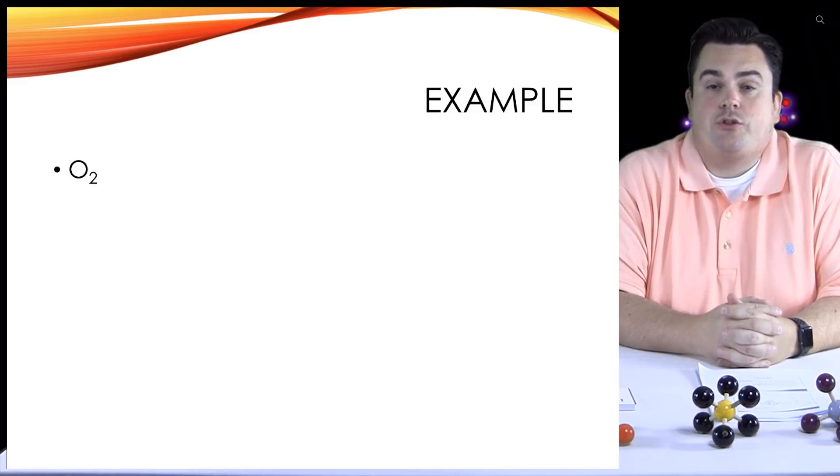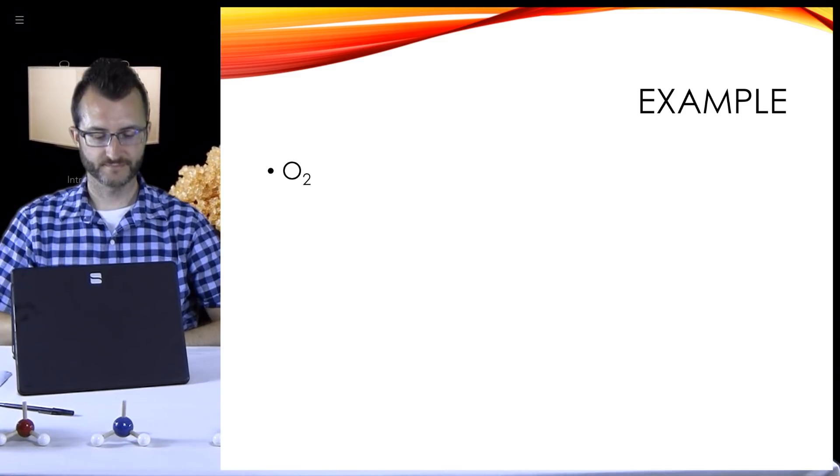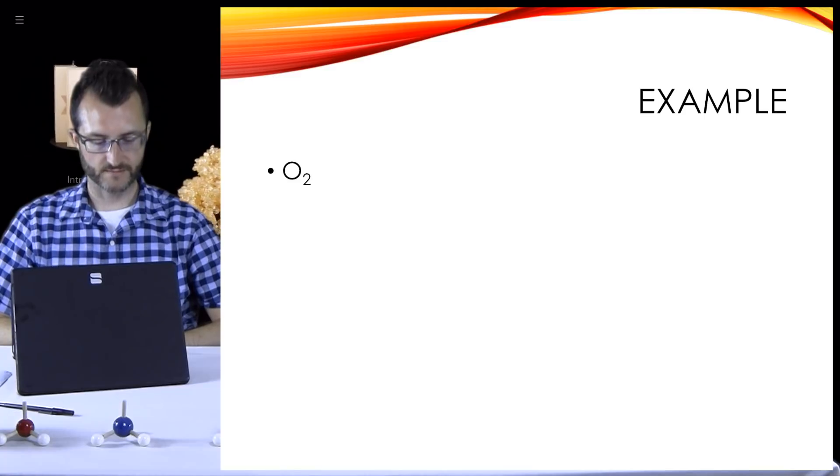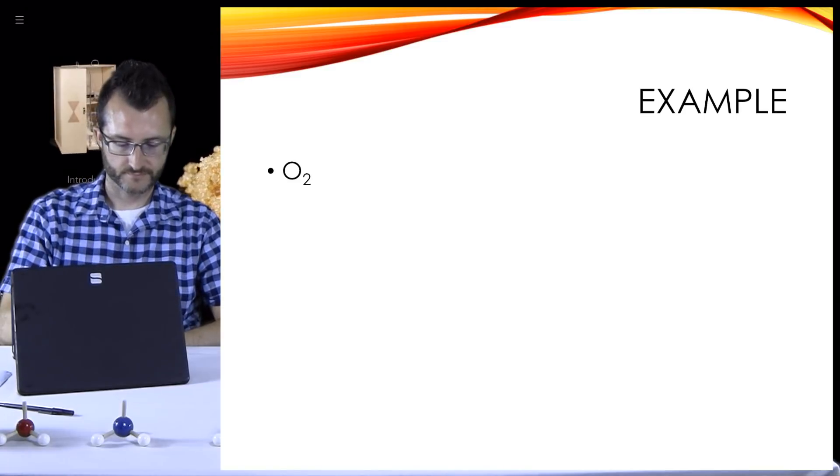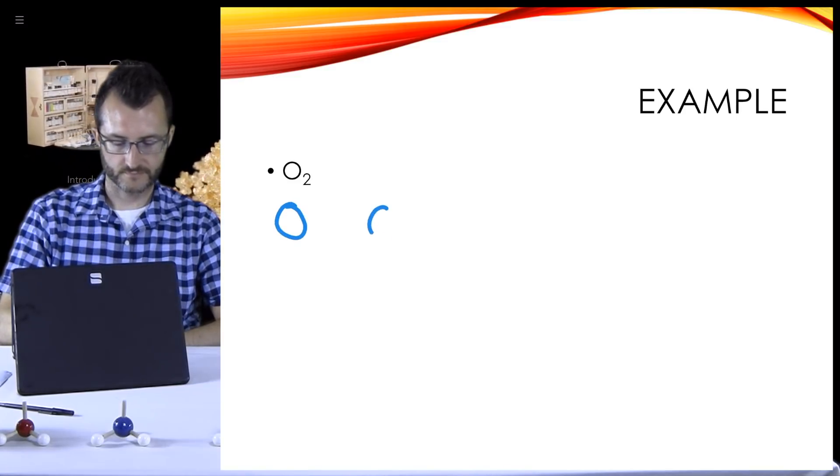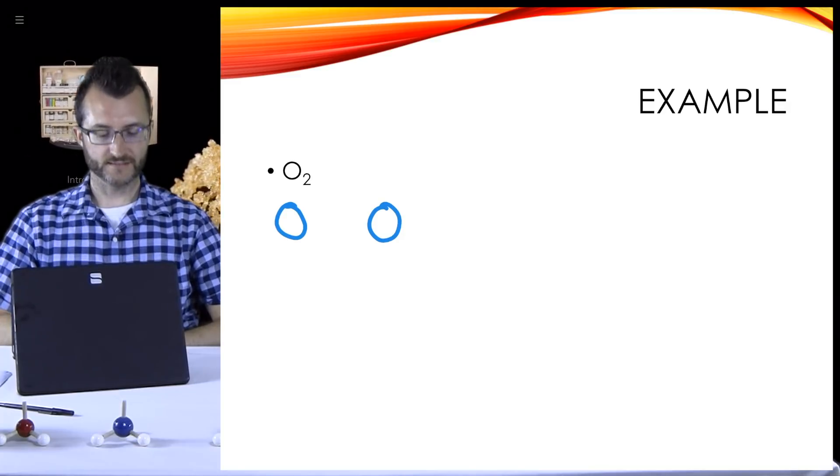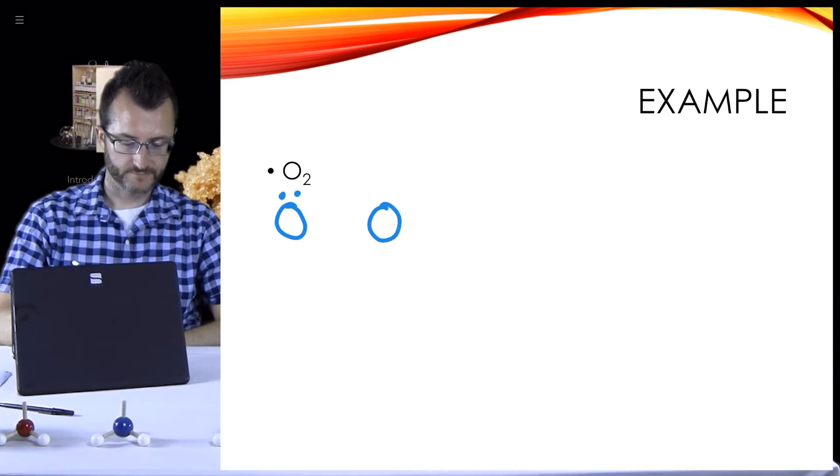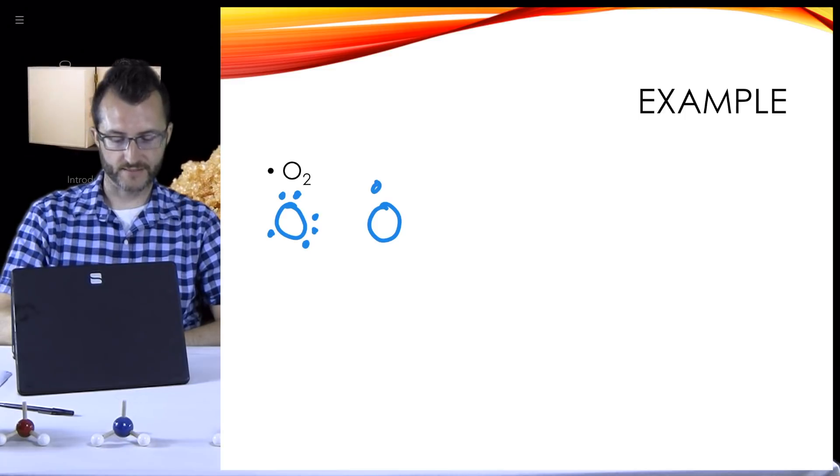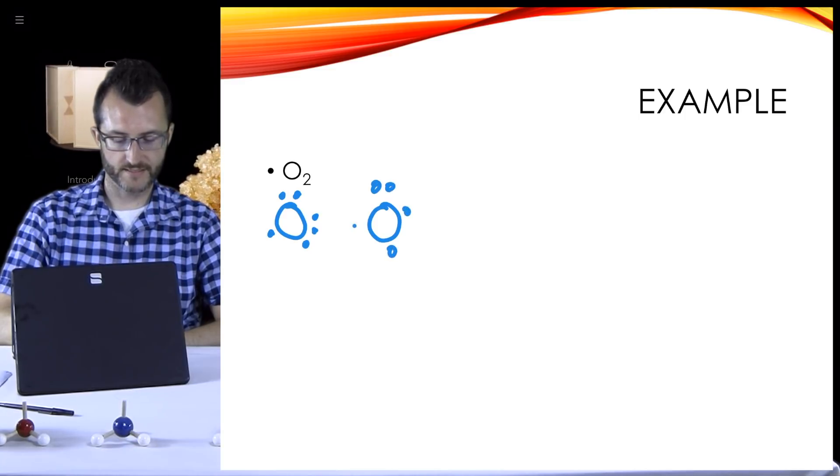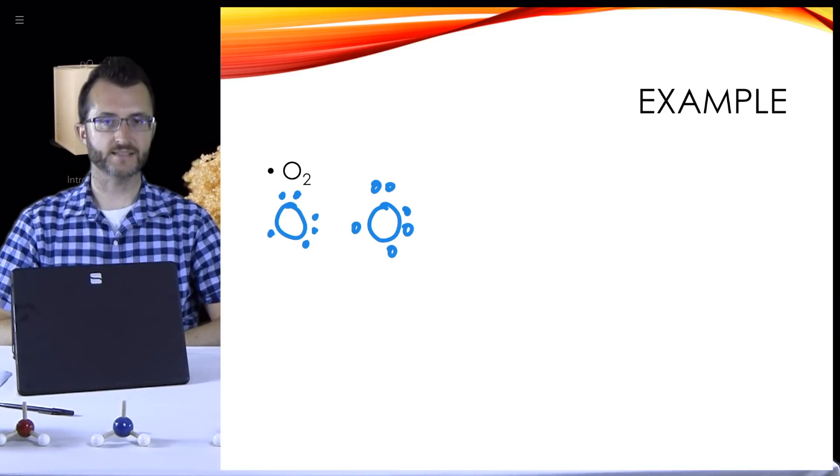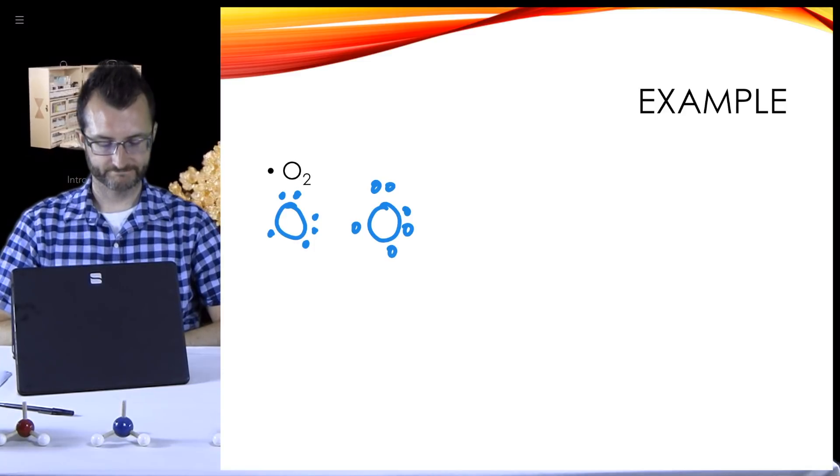We're going to do an example here. We're going to draw the molecule O₂. Let's draw the two oxygen atoms first. How many valence electrons does oxygen have? Six. And then I'm going to go back to the open circles thing. They each have six.